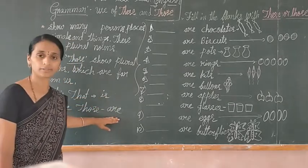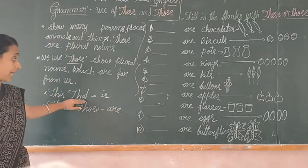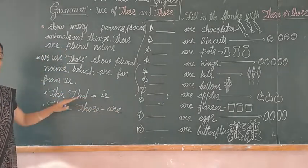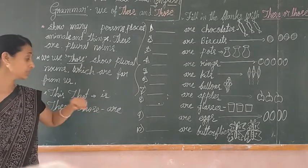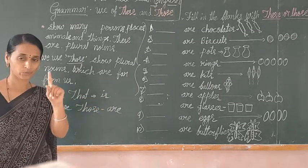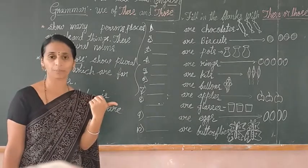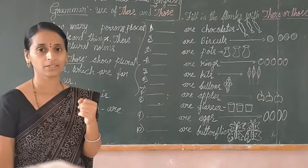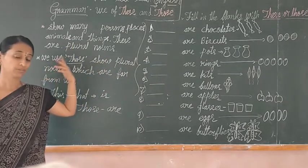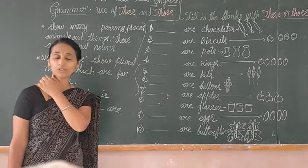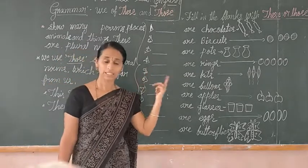Remember: 'this' and 'that' we use with 'is,' and 'these' and 'those' we use with 'are,' because 'is' is singular and 'are' is plural form. Now we will look at different examples to understand how to use 'these' and 'those.'